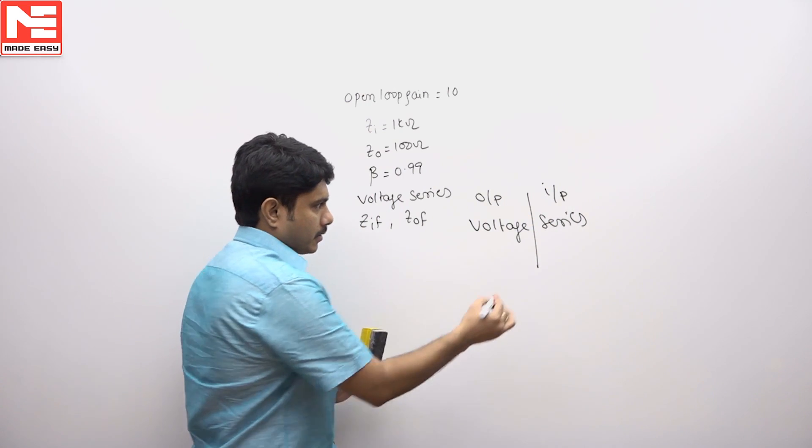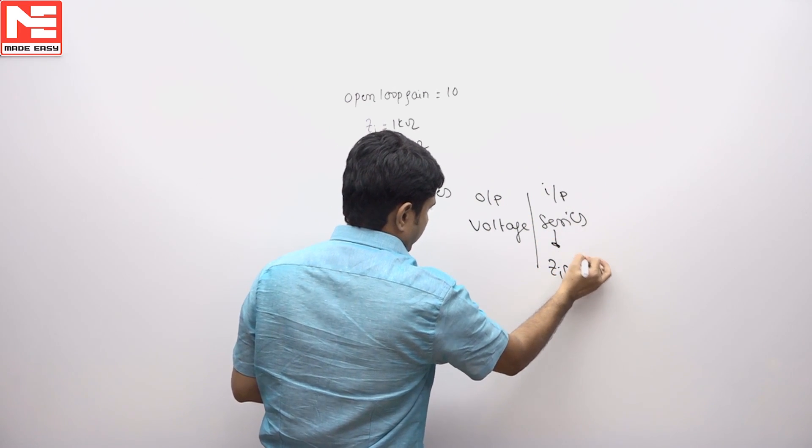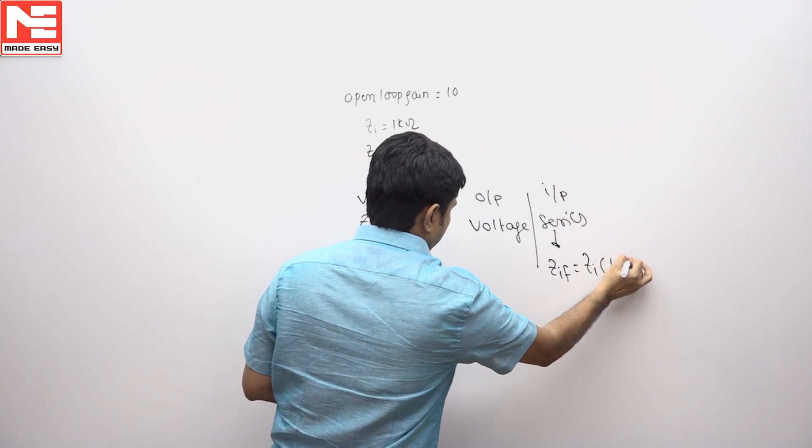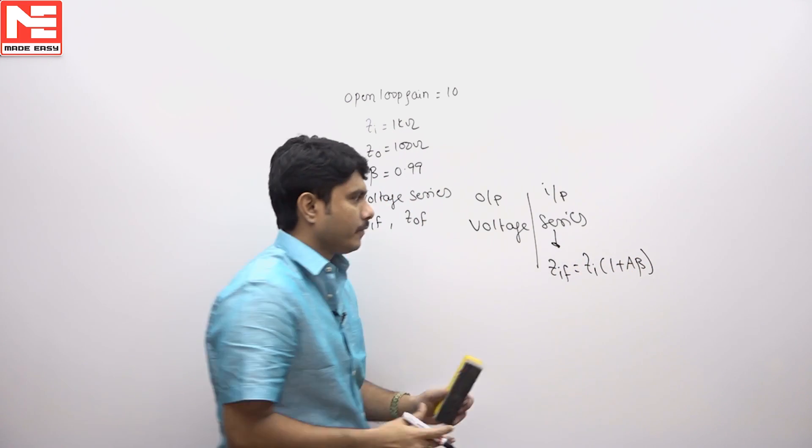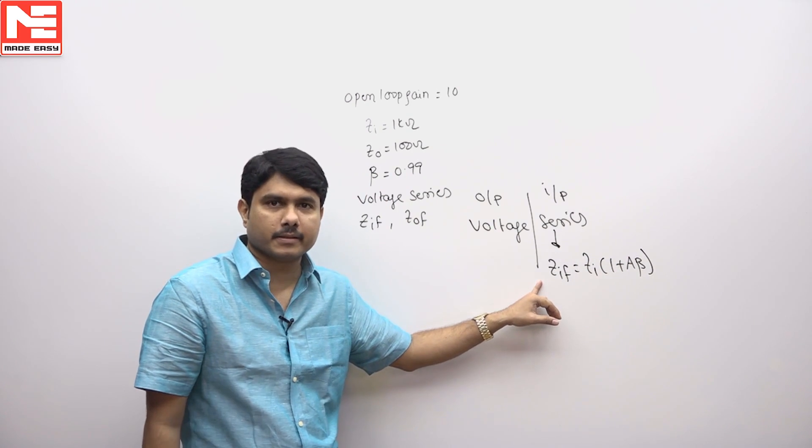For series connected systems, the ZIF formula is ZI times (1 plus A beta). For series connected systems, input impedance always increases.